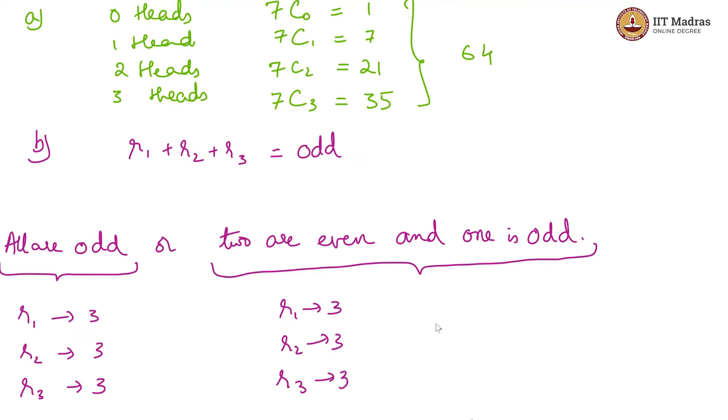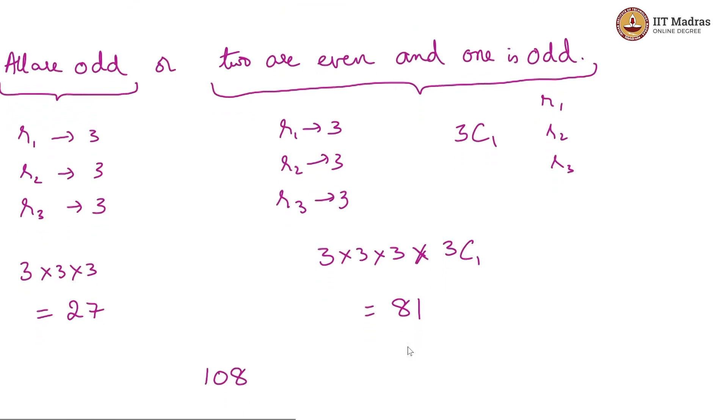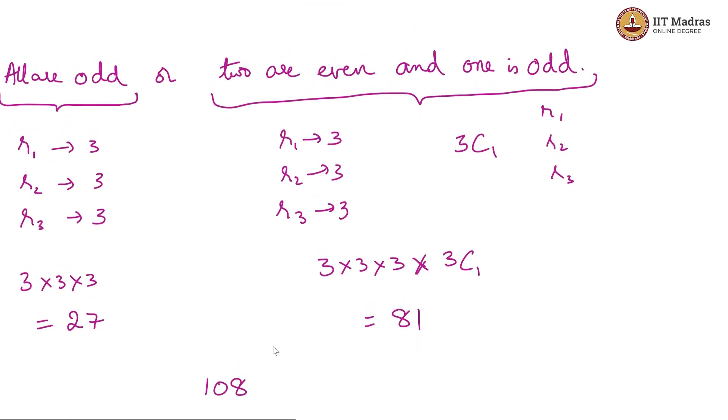But r2 and r3 will then have the options of being two or four or six. And now there is a further concern of which one is the odd result. So, that can be chosen in 3C1 ways, which is basically r1 is odd or r2 is odd or r3 is odd. Now, if we count the total number, we will have three into three into three is equal to 27 for all odd. Whereas, in the other case, you will have three into three into 3C1, which is 81.